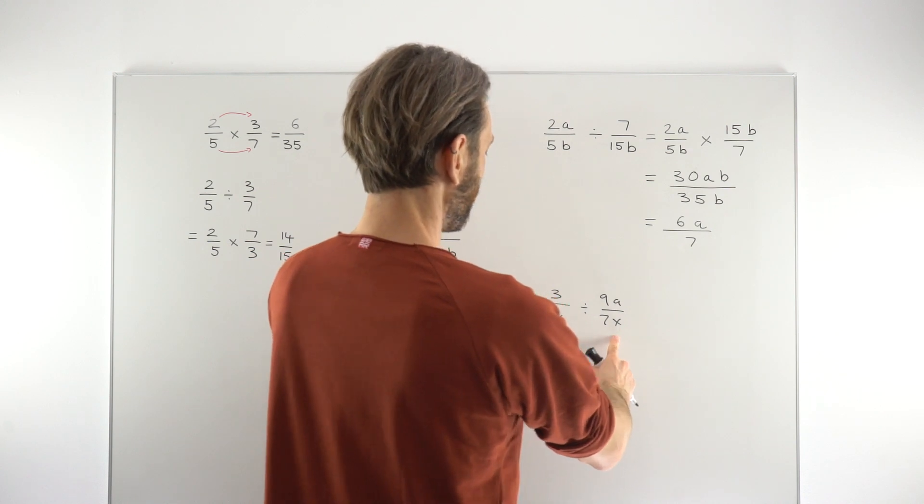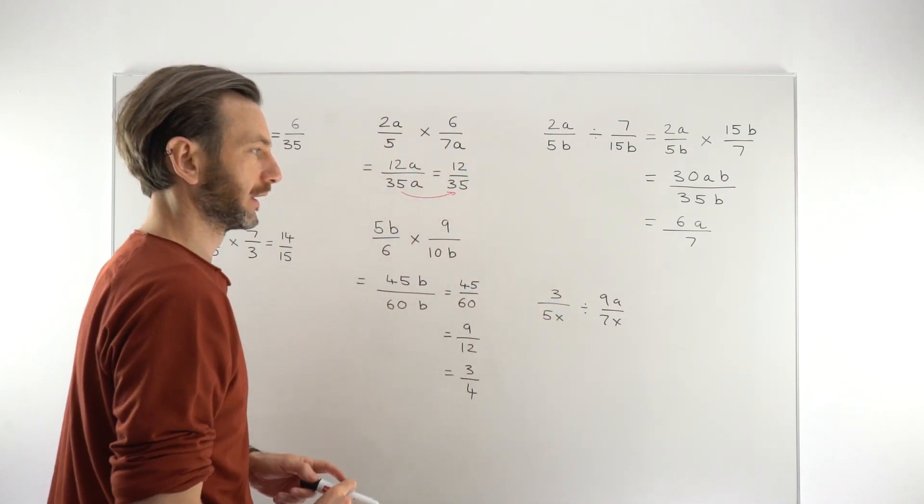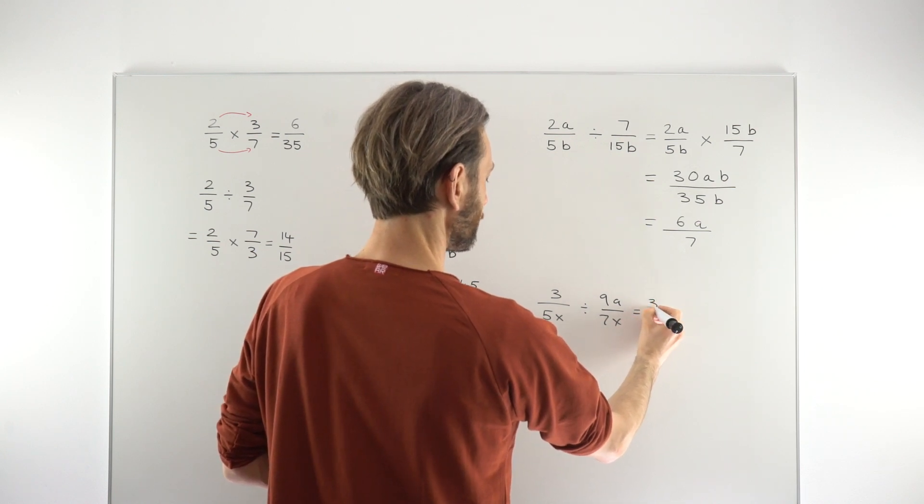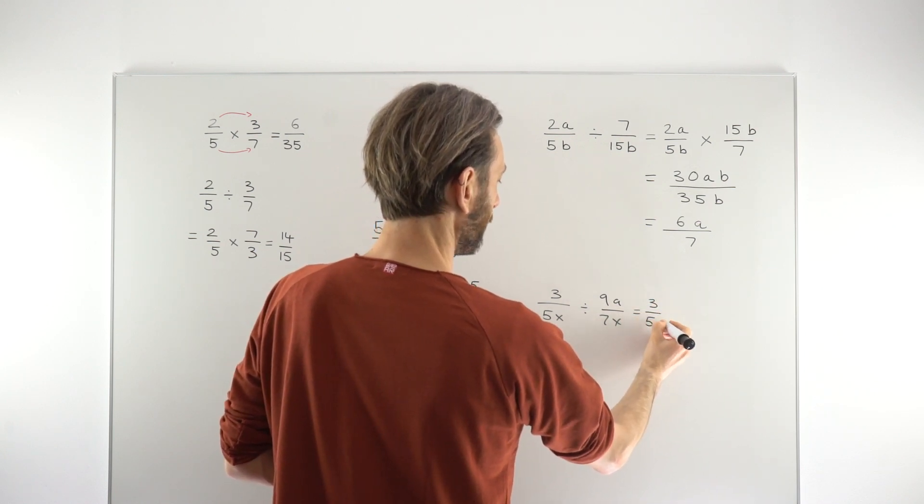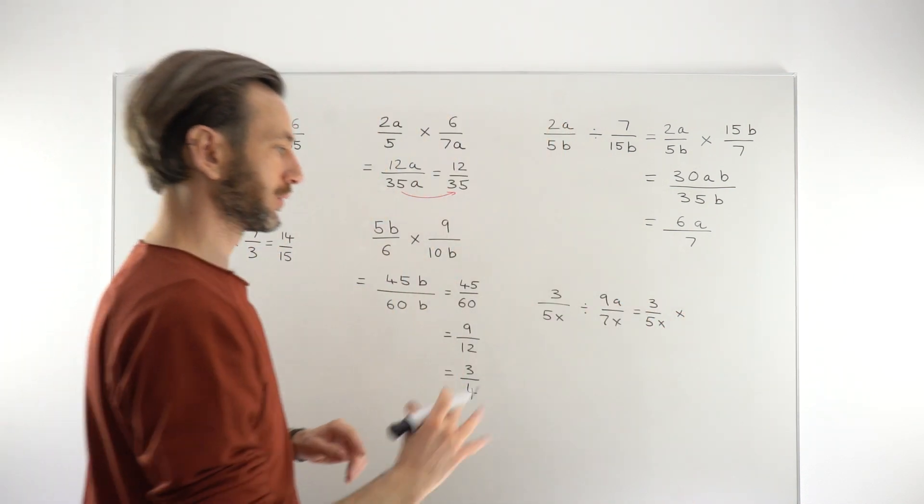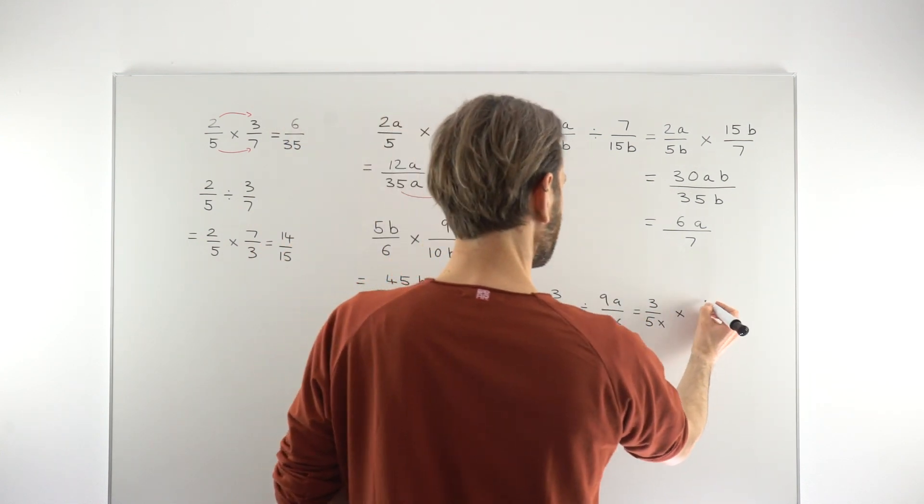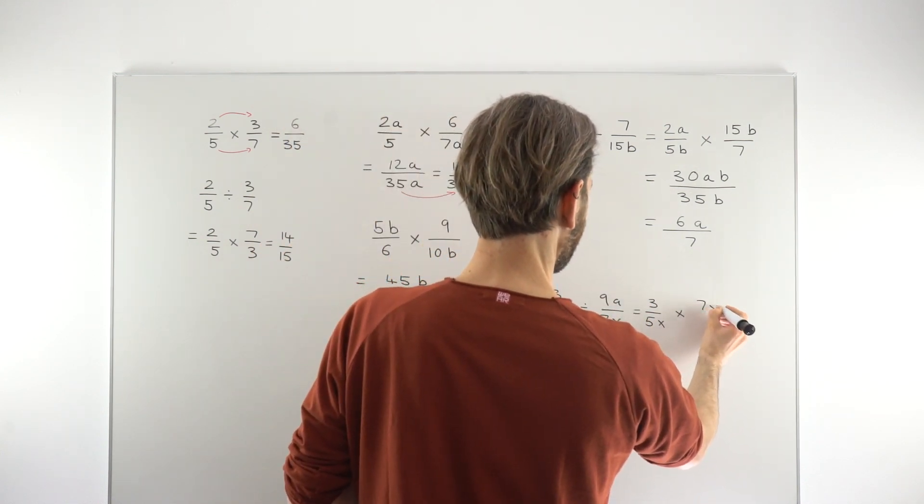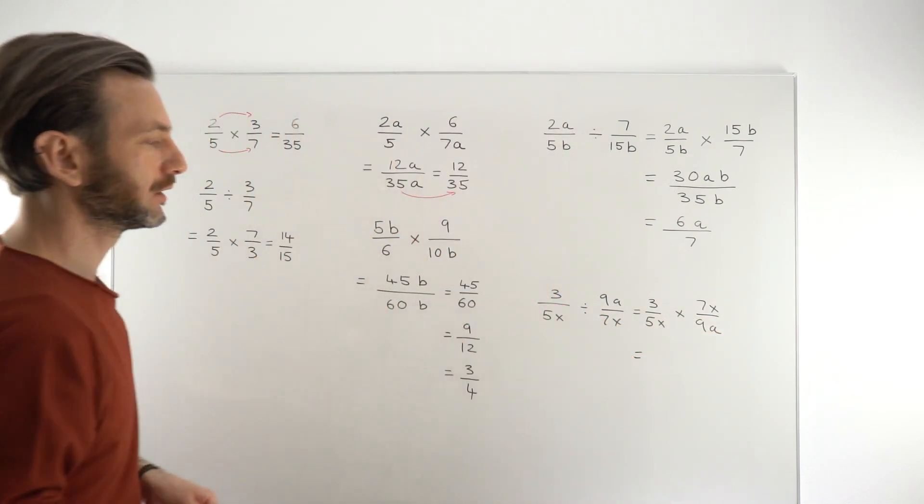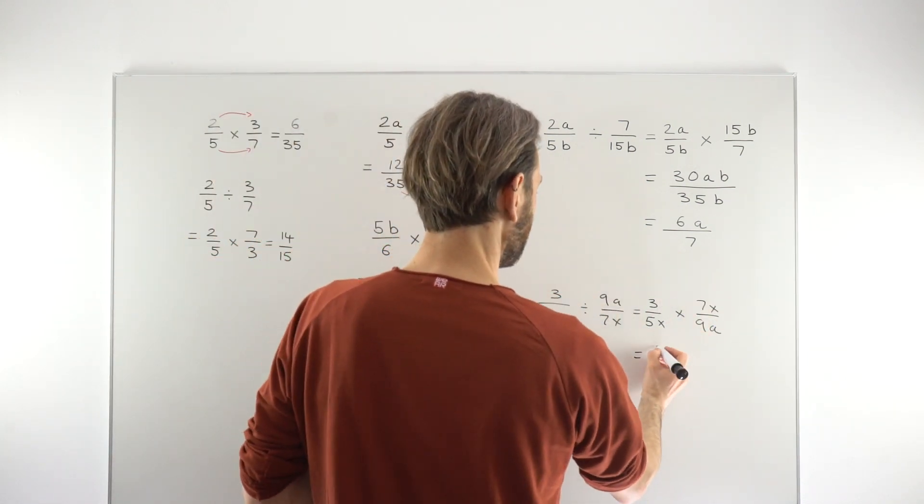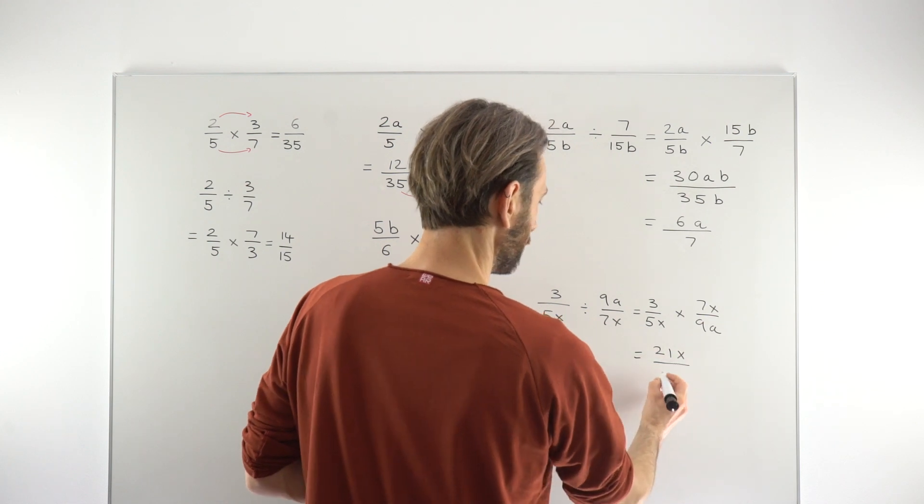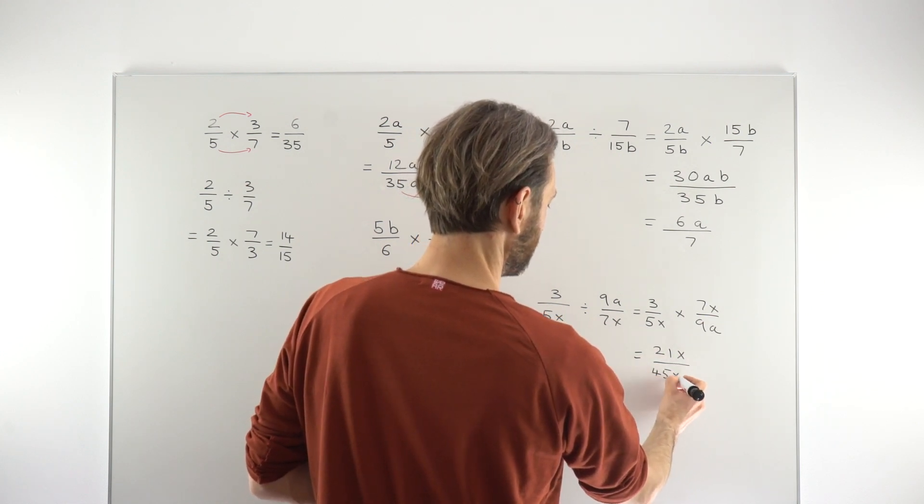Okay, so checking out the last one. Just going to go through the same thing again. So start by flipping that second fraction. Leave the first fraction alone. A lot of students will make the mistake of flipping the first fraction or even flipping both of the fractions. But it's only the second one that you need to flip. So turning it into a multiply and then rewriting the second fraction as 7x over 9. So we've got a bit of a mix of letters going on here. So 3 times 7x on the numerator gives us 21x. And then on the denominator we're going to have 45xa.